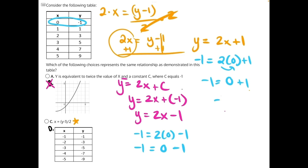0 plus 1 up here will give us a positive 1, not a negative 1. So answer choice C is incorrect.